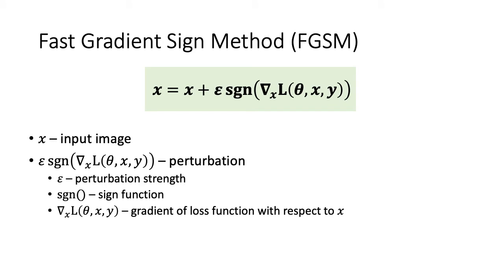Looking at the equation for the fast gradient sign method: first we have x, which is our input image, and then we have a perturbation term. Epsilon is the perturbation strength, sign is the sign function that maps the sign of its input to either plus or minus one, and the input to the sign function is the gradient of the loss function with respect to x.